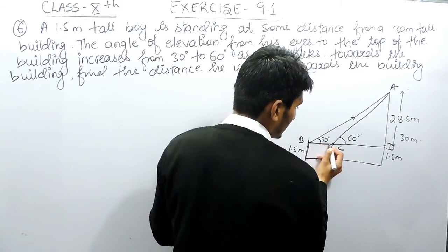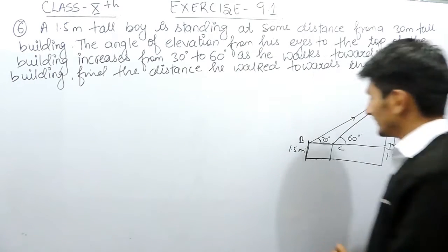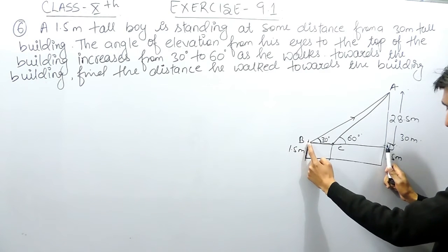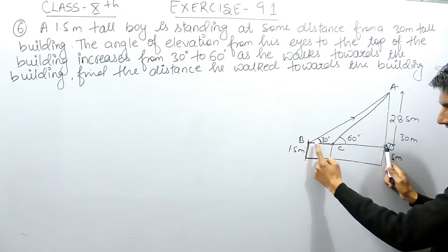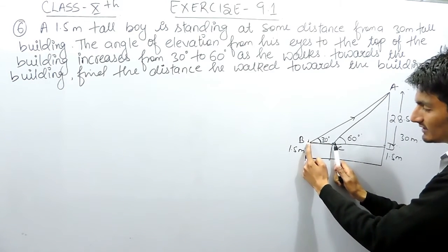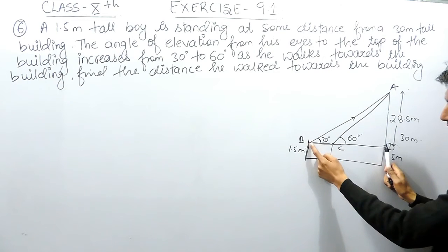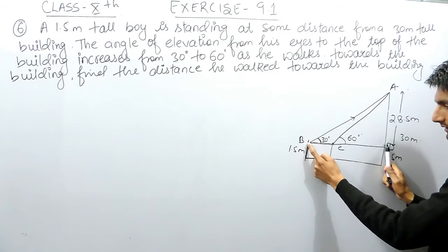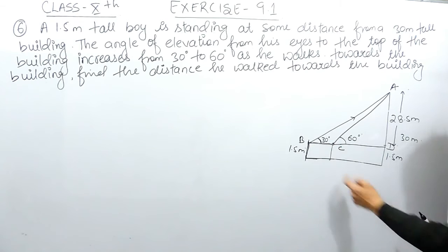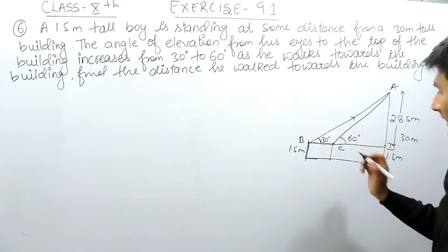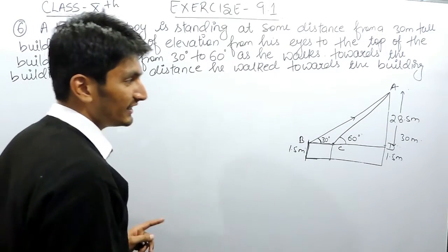We need to find the distance BC, which is the distance the boy walked. To find BC, if I know the distance BD and subtract CD from it, I'll get BC. So first I must find BD and CD, then subtract CD from BD — the remaining value will be the answer.